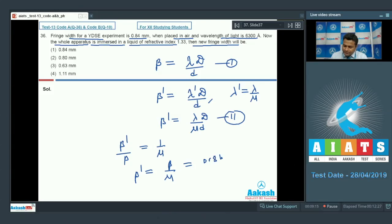0.84 upon mu is also given as 1.33. This 1.33 can be written as 4 by 3. After solving we will get the value of beta dash as 0.63 millimeter. So the fringe width in this case will be this, so option number 3 we can go with. Now move on to the next, that is 37.